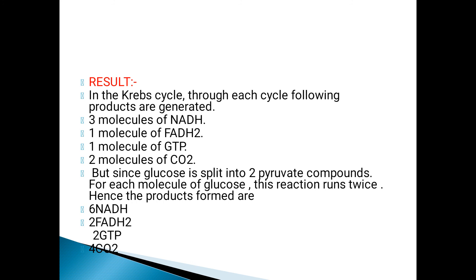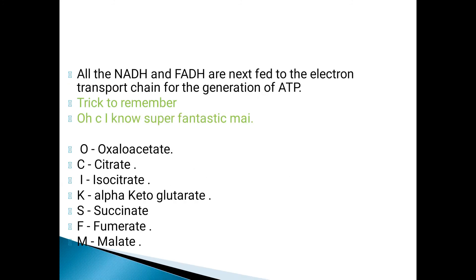Here is a trick for remembering the steps of the Krebs cycle. If you arrange the steps, they can be remembered as: OC, IK, SF, and M. Remember the line: 'OC, I know, super fantastic, am I?' — where O means oxaloacetate, C means citrate, I means isocitrate, K means alpha-ketoglutarate, S means succinate, F means fumarate, and M means malate.